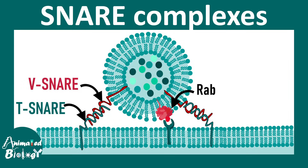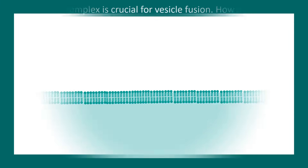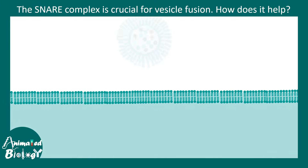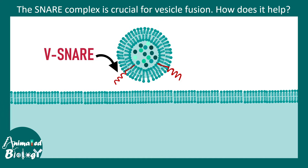In this video we'll talk about the SNARE complex and vesicle fusion. The SNARE complex is crucial for fusion of vesicles. The question is how does the SNARE complex help in the vesicle fusion process. Here we are looking at the target membrane and a particular vesicle. From the particular vesicle there would be SNAREs known as vesicle-bound V-SNAREs.